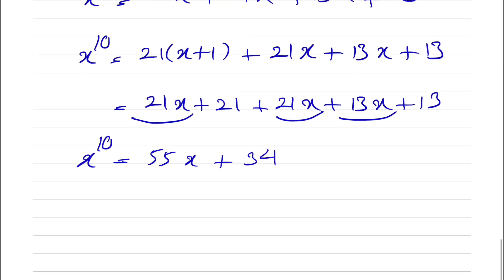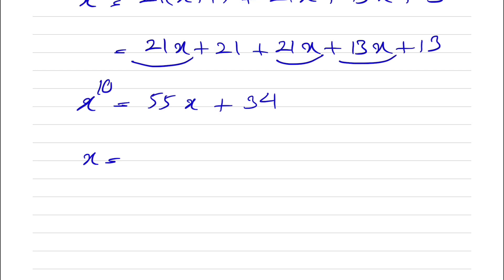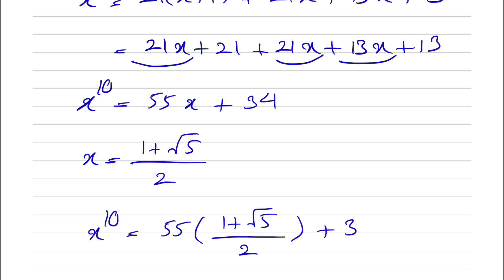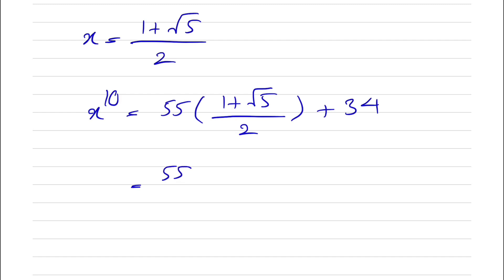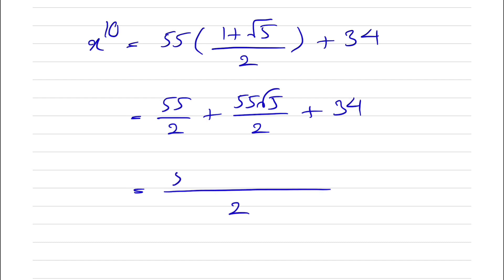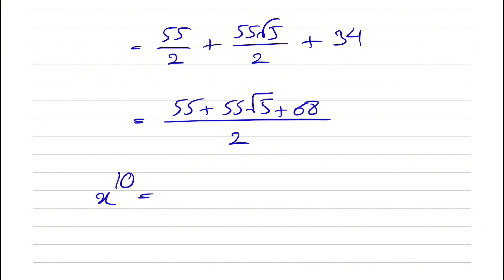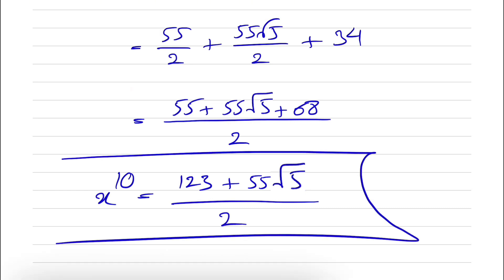Now we plug in x = (1 + √5)/2. So x¹⁰ = 55·(1 + √5)/2 + 34 = 55/2 + 55√5/2 + 34. Taking the common denominator of 2: x¹⁰ = (55 + 55√5 + 68)/2 = (123 + 55√5)/2. That is the final answer. If you have another approach, let me know in the comments so everyone benefits. Stay safe and see you in the next video!